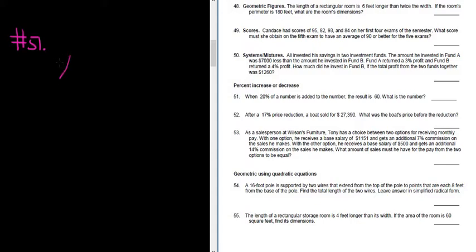The question wants us to find the number, so this is the number. So 20% of a number is added to the number. So 20% of the number—'of' means multiply—is added to the number.